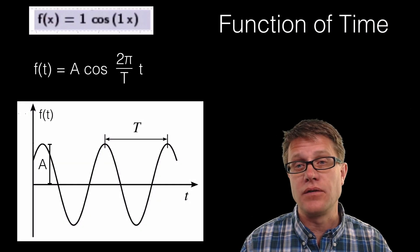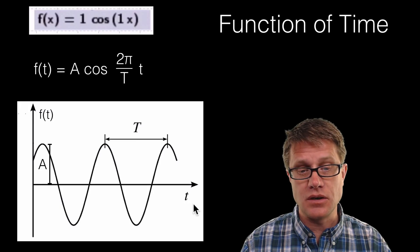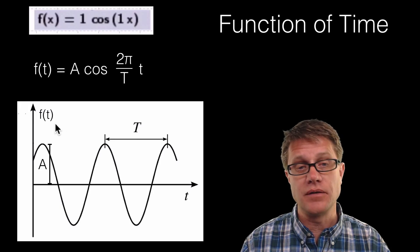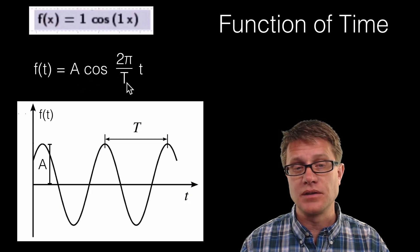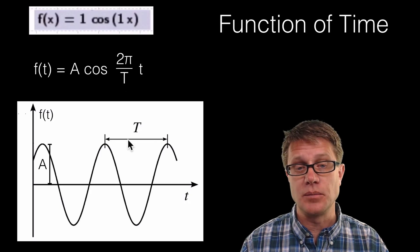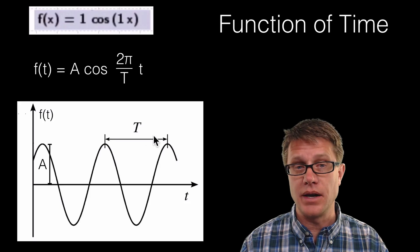Now we could also look at it as a function of time. So we have changed the graph. Now we have t here in f of t. Same equation. We have got amplitude in the front, cosine of 2π over, but instead of having lambda we have T. T is simply going to be the period of the wave.